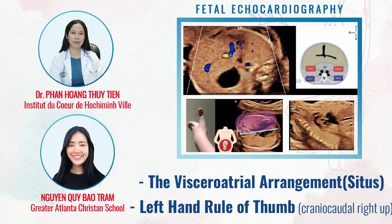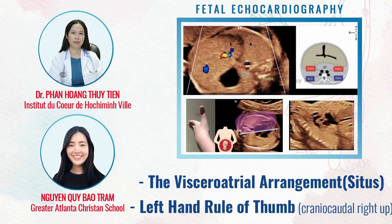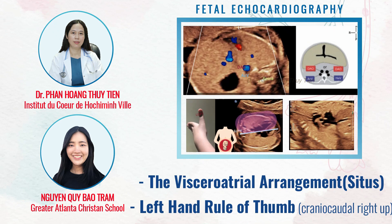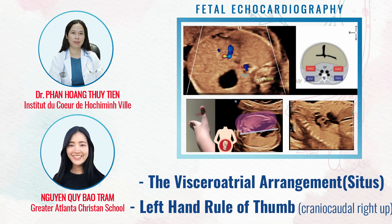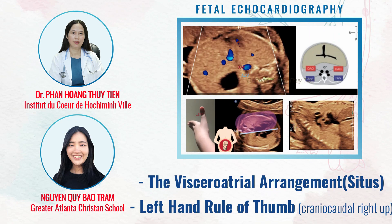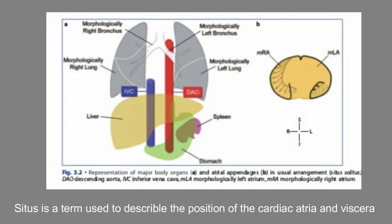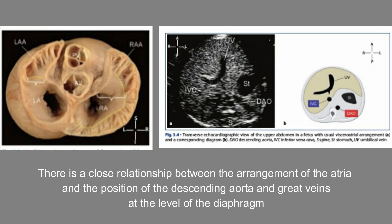In the sequential segmental approach to diagnosing congenital heart disease, the morphological arrangement of the atria is the starting point. Situs is a term used to describe the position of the cardiac atria and viscera. There is a close relationship between the arrangement of the atria and the position of the descending aorta and the great veins at the level of the diaphragm.